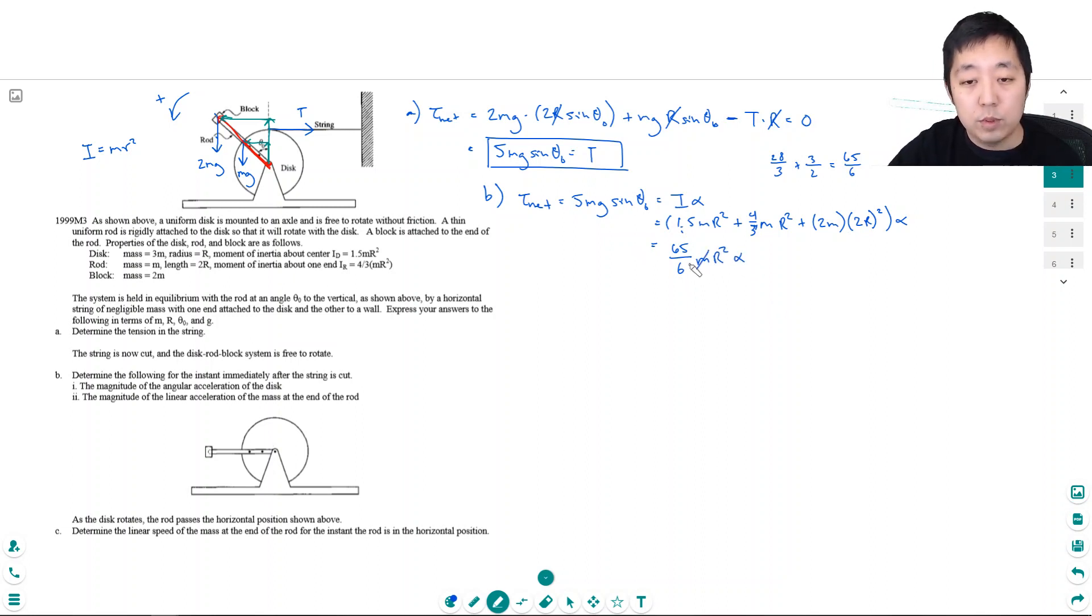And that's equal to that. The m's will cancel on both sides here, and I can solve for alpha. I'm gonna do 5g sine theta times 6 divided by 65 divided by r squared. This 5 cancels becomes 13. And that's equal to 6 thirteenths g sine theta theta naught over r squared. So that's the instantaneous acceleration right when I cut this string.